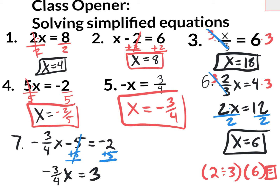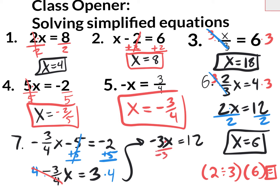Now I want to get rid of this fraction. A fraction is a division problem, so you get rid of division with multiplication. You could get rid of any fraction by multiplying everything by the denominator of the fraction you want to get rid of. So I'm going to multiply both sides by 4. That gives me negative 3x left over when the 4s cancel. Negative 3x equals 3 times 4, which is 12. For my final step, negative 3 times x equals 12, so divide by negative 3, giving x equals negative 4.